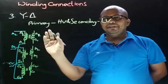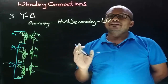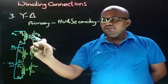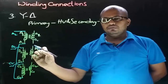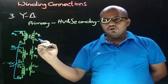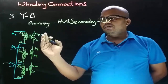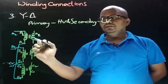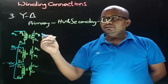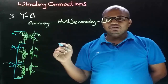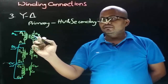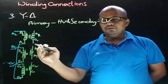Now let's obtain the delta connection on the secondary side. Delta connection is obtained by joining the non-dot end terminal of one coil with the dot end terminal of another coil, or by connecting the dot end terminal of one coil with the non-dot end of another coil. That is, we can obtain delta by joining the finishing end of one coil with the starting end of another coil, or vice versa. Here let's join the non-dot end of one coil with the dot end of another coil.